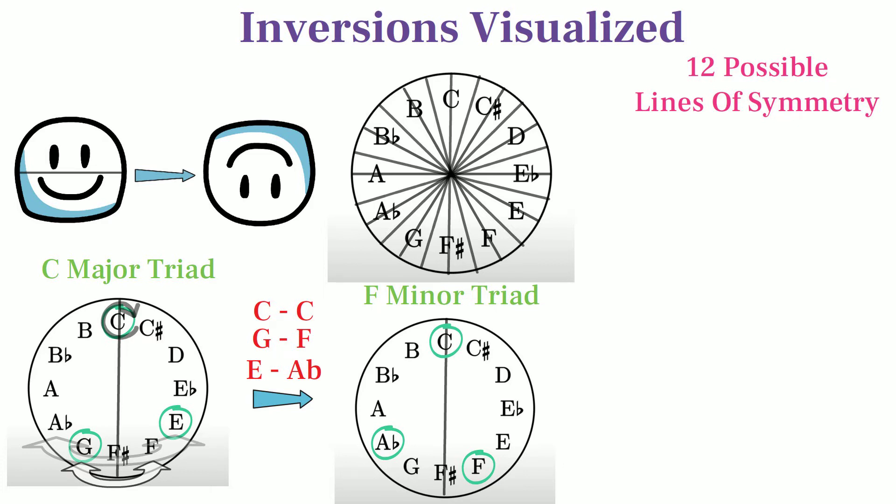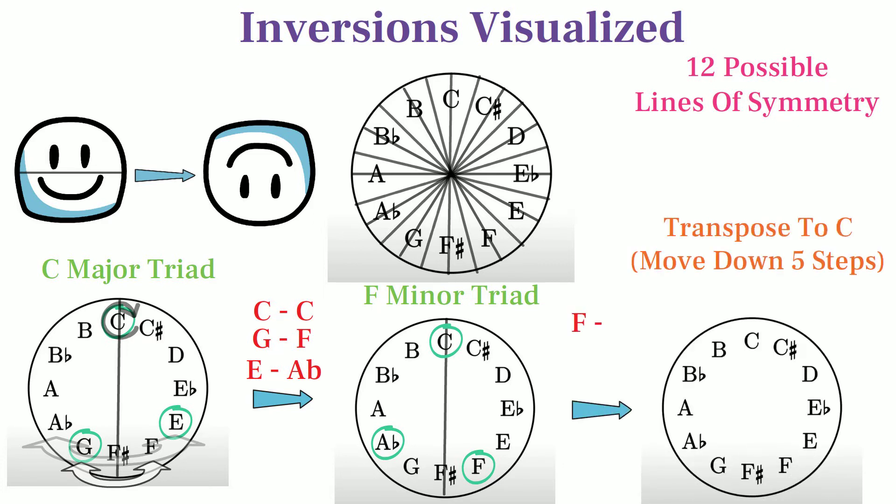Now that we've inverted the set, we can compare the inverted version to the original set by transposing the inverted set back to C. With our C major chord example, we reveal that inverting a major chord gives us a minor chord.